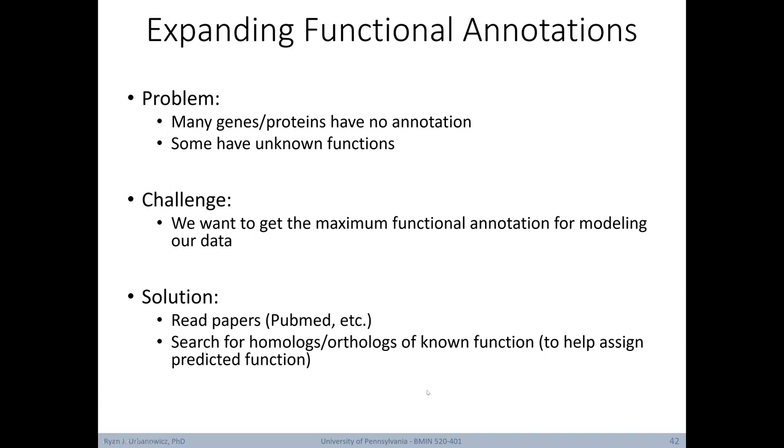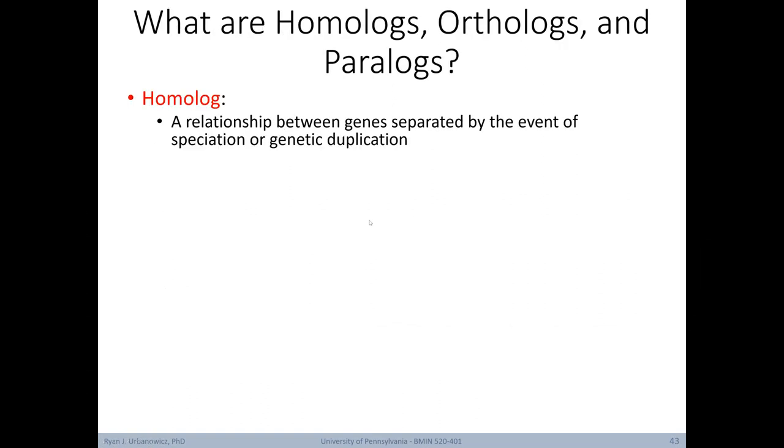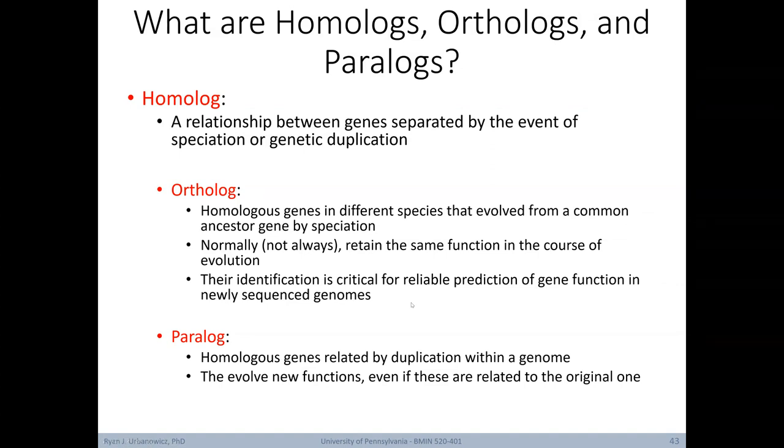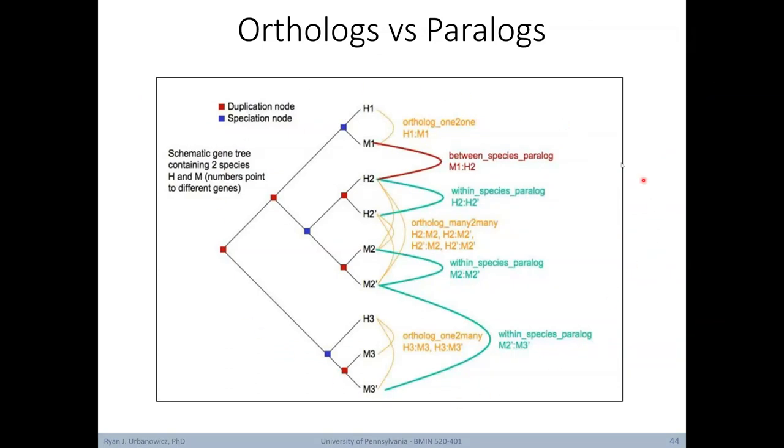Let's briefly review the difference between homologs, orthologs, and paralogs. Homolog is the more general term and describes a relationship between genes separated by the event of speciation or genetic duplication. Both ortholog and paralog are types of homologs. An ortholog refers to homologous genes in different species that evolve from a common ancestor gene by speciation. Normally, but not always, these homologous genes retain the same function over the course of evolution. The identification of orthologs is critical for the reliable prediction of gene function in newly sequenced species. A paralog, on the other hand, refers to homologous genes related by a duplication within a genome. Paralogs can often evolve new functions, even if these are related to the original one.